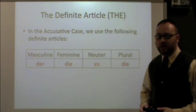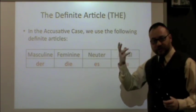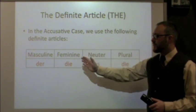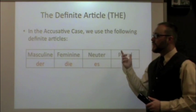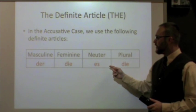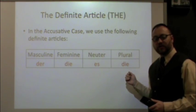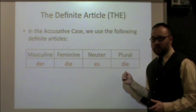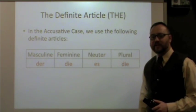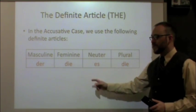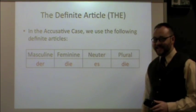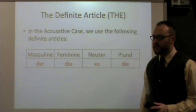In video 12 we also covered the definite article — the word for 'the.' In the nominative case, we learned there were masculine, feminine, neuter, and plural genders of nouns. That carries over to the accusative case. And if you notice, the definite articles for the accusative case are exactly the same as the nominative. So if you've already memorized those, you're a step ahead. For masculine, 'the' is 'der.' For feminine, it's 'di.' For neuter, it's 'es.' And for plural, it's 'di.' Exactly the same as the nominative case.